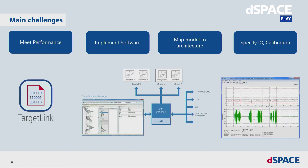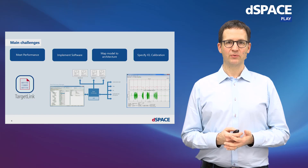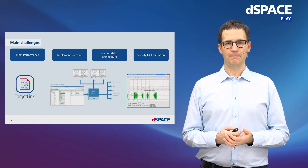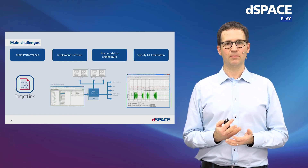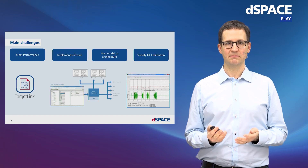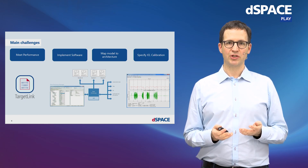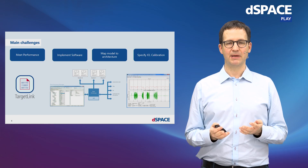We use TargetLink to take care of the actual code generation, taking care of the coding step. This ensures performance requirements are met because TargetLink will generate highly performant production C code. We use the TargetLink data dictionary to map the model to the architecture and implement the software architecture. In TargetLink, this is the recommended way of specifying production code settings, and it allows you to change the production code settings independently of the model.